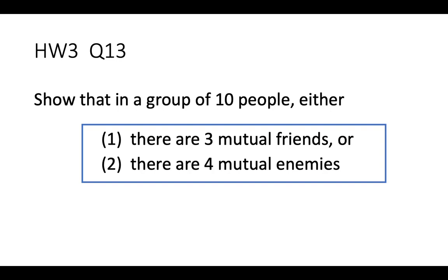Of course, if you have 4 mutual friends, that satisfies the 3 mutual friends condition. And similarly, 4 mutual enemies means you can find 4 of them — you can also have 5 or even 10 mutual enemies, that's okay. You can also have 3 mutual friends and 4 mutual enemies at the same time. What we want to say is that no matter what happens, at least one of these two cases will occur.